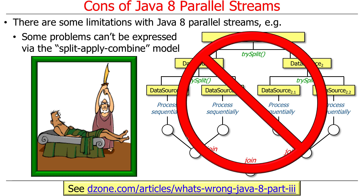That image represents a Procrustean bed from Greek mythology. Procrustus was an innkeeper who would give people a place to stay, but he had a bed called the Procrustean bed — his goal was to make you fit into it. If your legs were too long, he would chop them off; if you were too short, he'd stretch you. That's a metaphor for not having things fit appropriately — if something doesn't fit into the split-apply-combine model, it's going to be rather painful, just like the Procrustean bed.